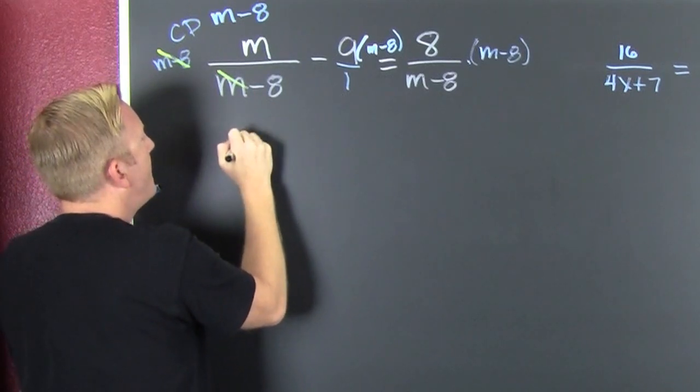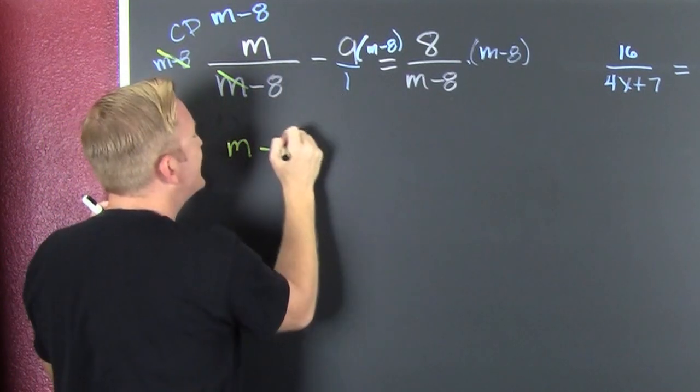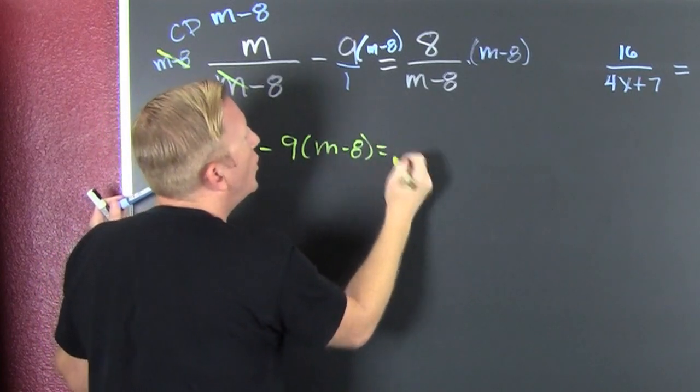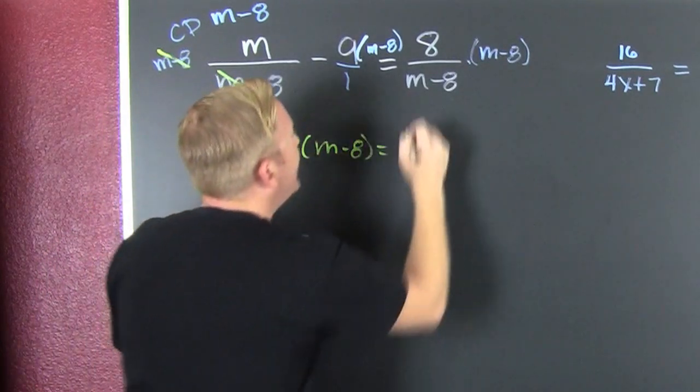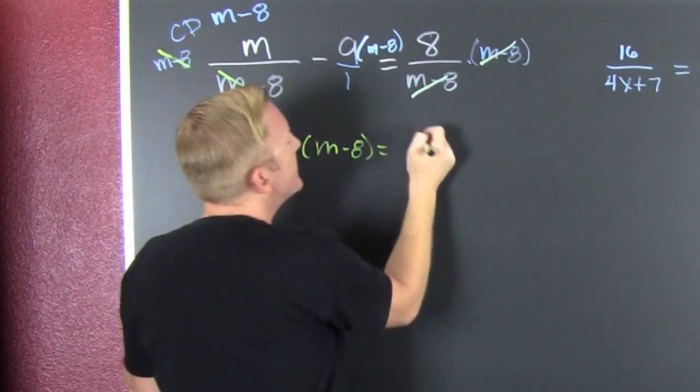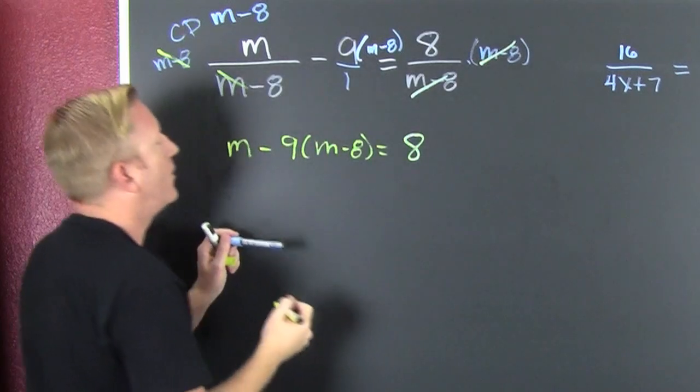And here I'm left with m minus 9 times m minus 8. And then on the right, they fight. I'm mixing colors. So then that's 8.